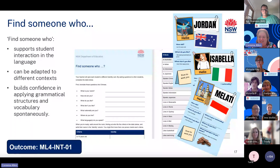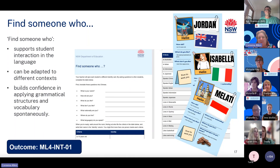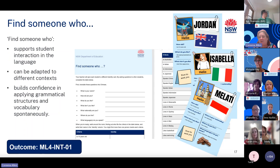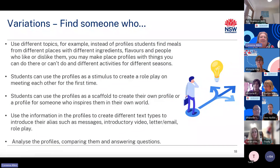Activity 6: Find Someone Who. This activity supports student interaction in the language, can be adapted to different contexts, and builds confidence in applying grammatical structures and vocabulary spontaneously. Students complete a table by asking and responding to questions used when meeting new people. Students are provided with a profile as their alias and engage in conversations exchanging information about names, age, birthday, nationality, language, where people live, and basic likes and dislikes — great for unit one when starting courses with new students. Students continue interacting until they find someone that matches each criteria in the table.